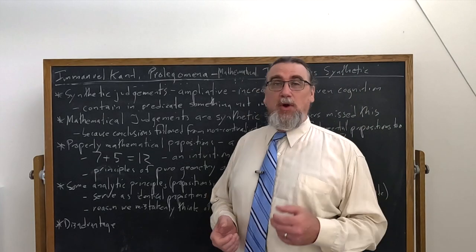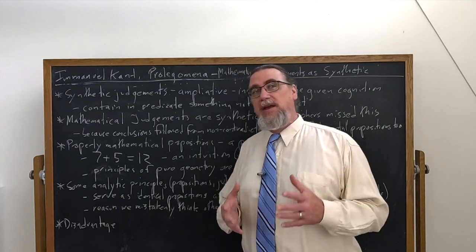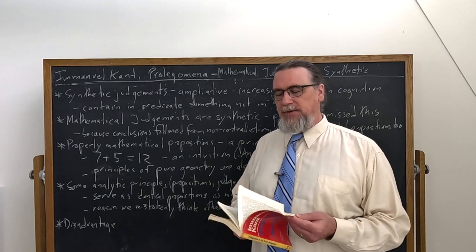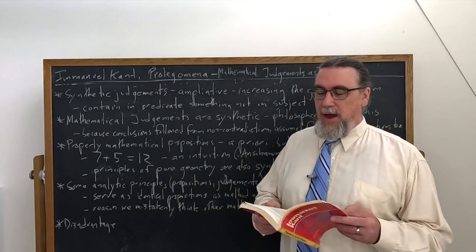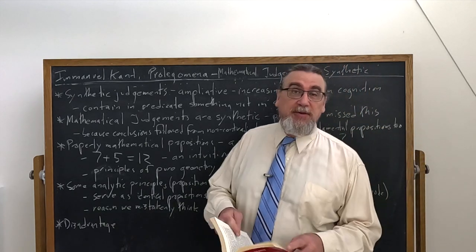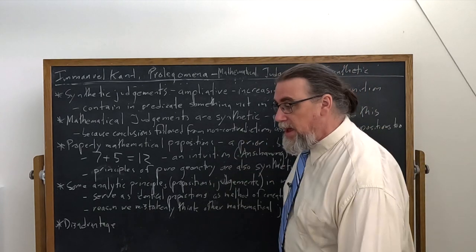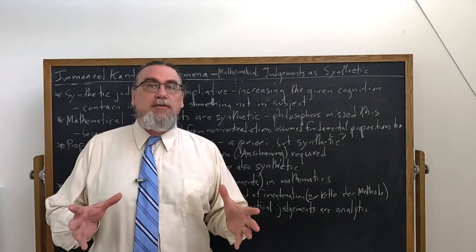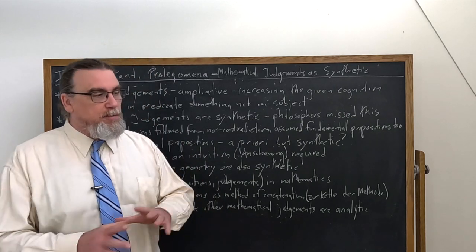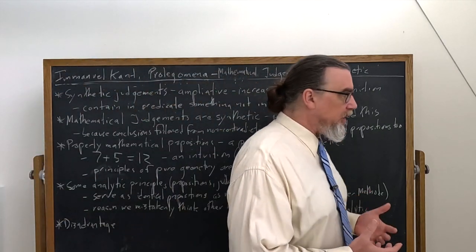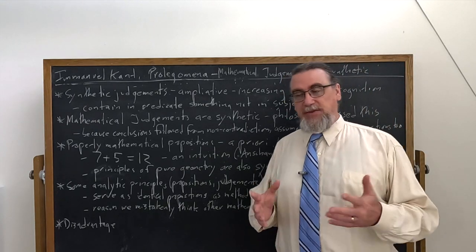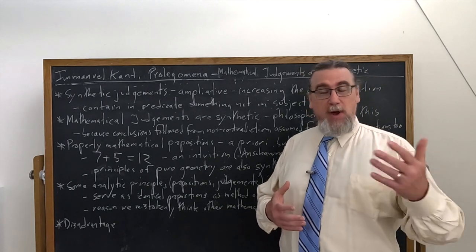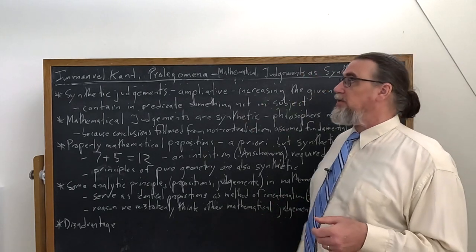In his Prolegomena to Any Future Metaphysics, Immanuel Kant has a very interesting and important discussion of mathematics in the preamble on the peculiarities of all metaphysical cognition, specifically in section two. He's going to go into much greater depth and detail looking at the nature of mathematics in the first part, but we want to look at what he's actually telling us here. The first thing that he says is mathematical judgments, propositions, whatever we want to call them, are in fact synthetic.